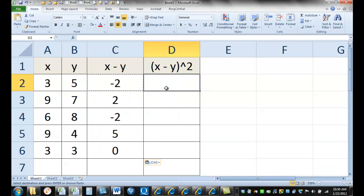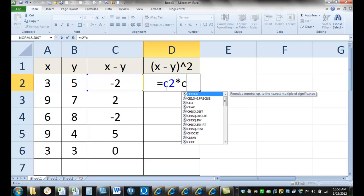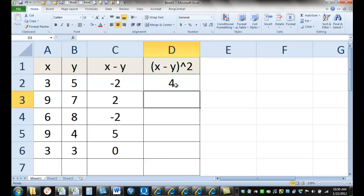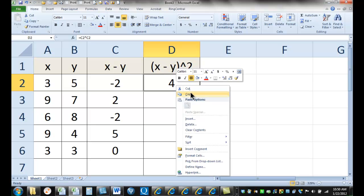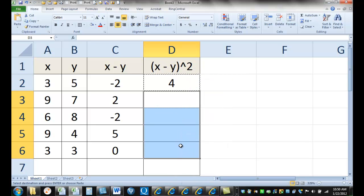Now we're going to square those values. That would be C2 times C2. Get 4. Copy that formula. Paste it in here.